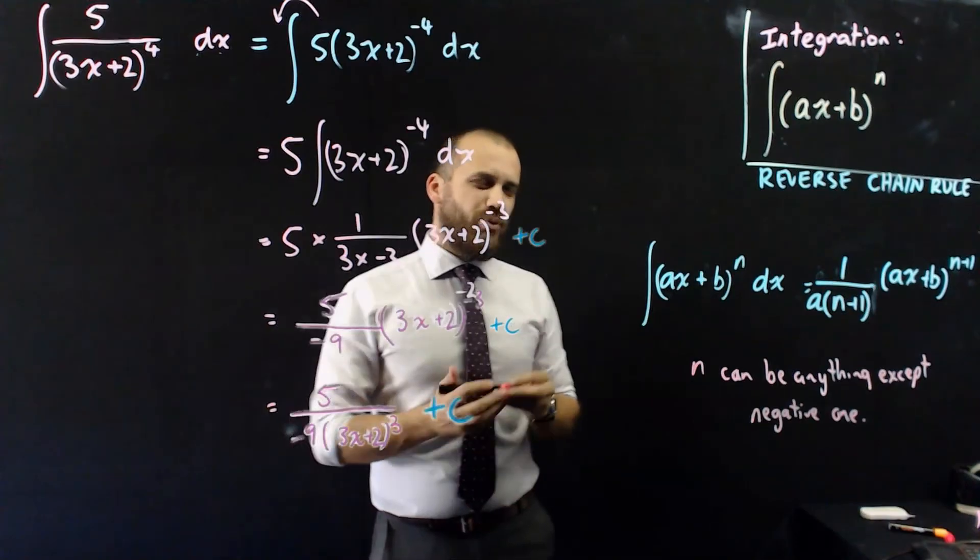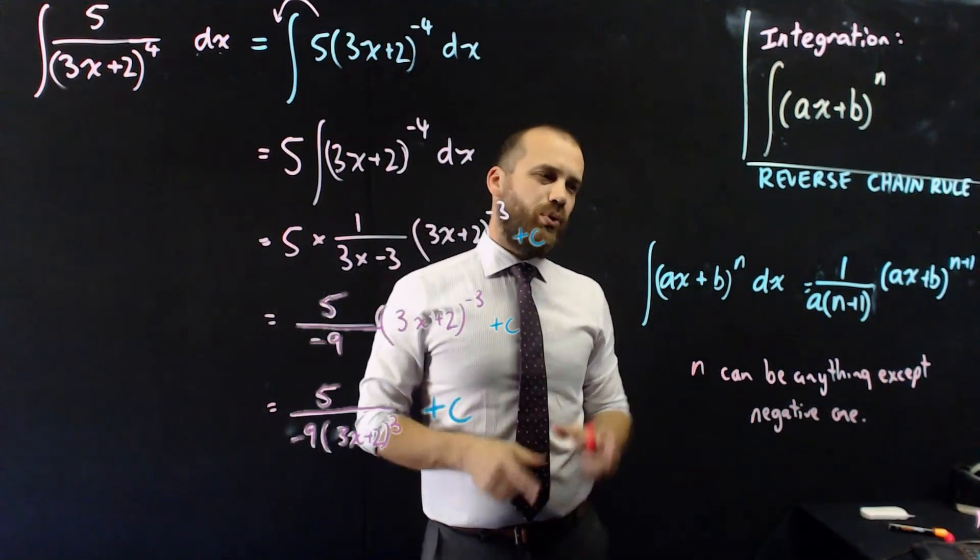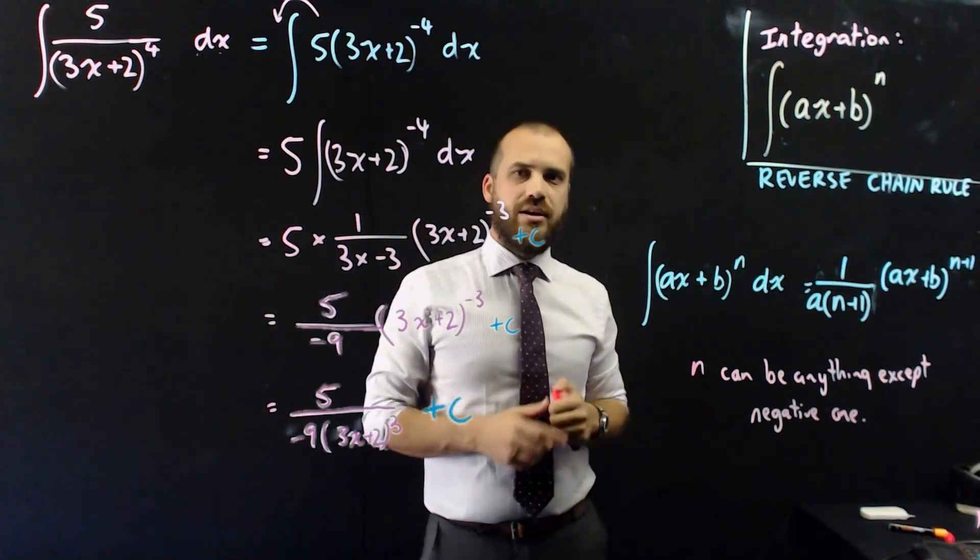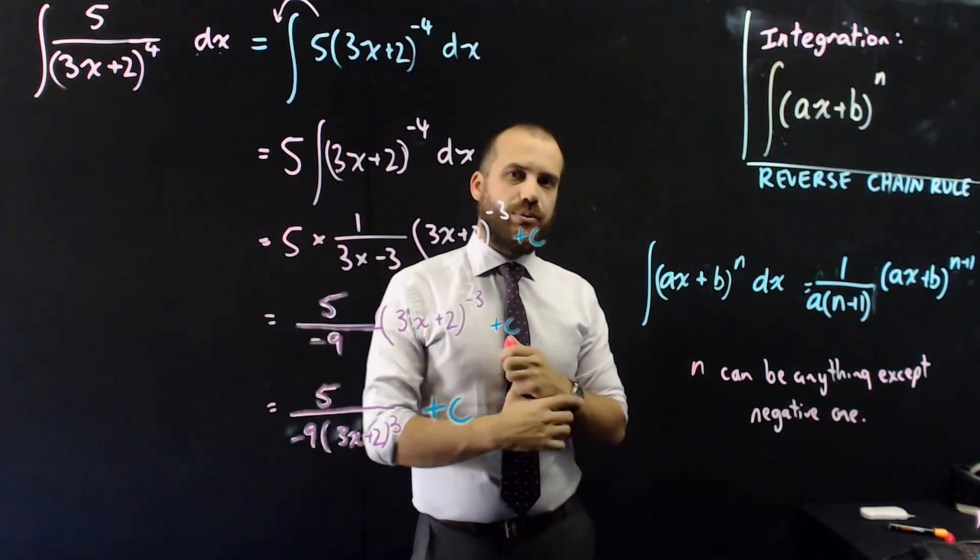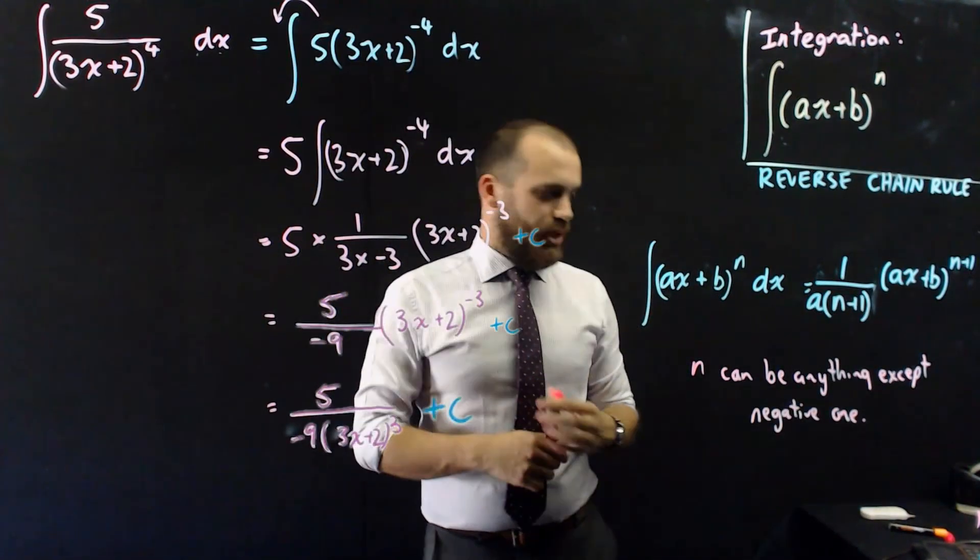Now, you should probably think for a minute, why wouldn't negative 1 be a good value for n? Why won't it give me answers that look like this? Why can't I use that formula? The next video will explain why.